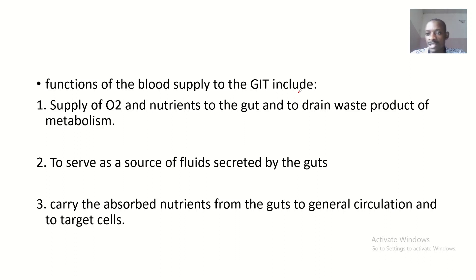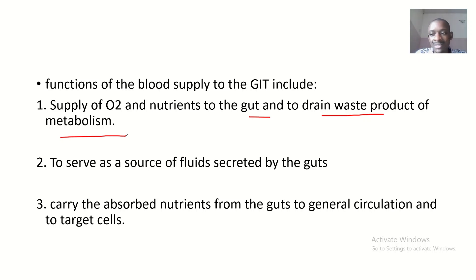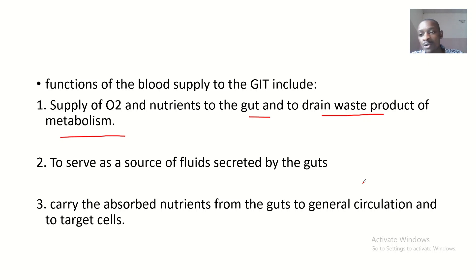The functions of blood supply to the GIT include: supplying oxygen and nutrients to the gut cells, draining waste products of metabolism — since the GIT is actively involved in motility and absorption — and serving as a source of fluid secreted by the gut. The blood brings in fluid, hormones, and everything that is secreted by the gut.